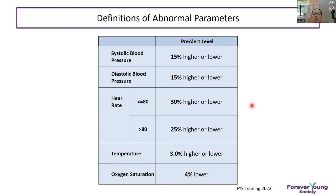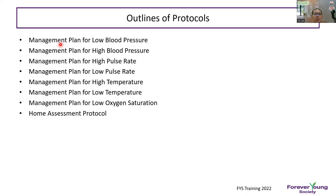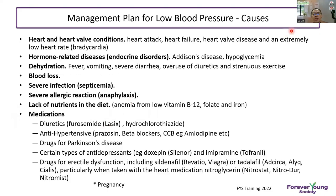Based on these abnormal parameters, our nurses need to be well trained according to the protocol — what to do when they reach the resident's house. They will zoom in on possible causes and generate reports. For the next few slides, we'll go through management plans for low blood pressure, high blood pressure, high pulse rate, low pulse rate, high temperature, low temperature, low oxygen saturation, and the home assessment protocol.